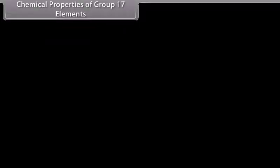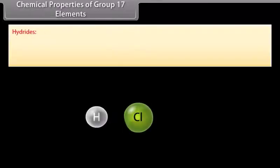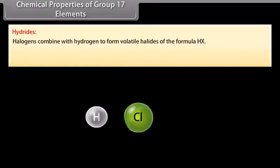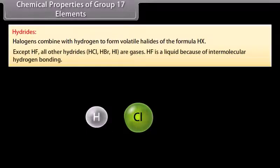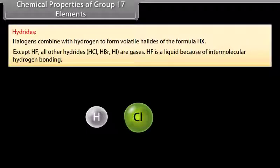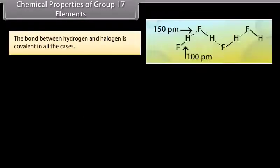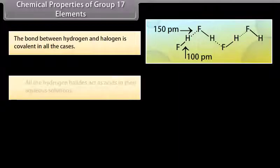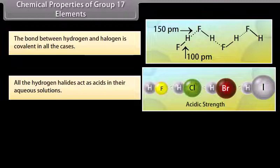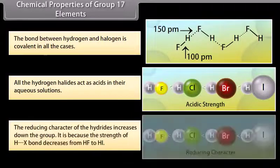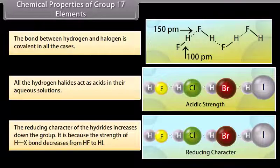Chemical properties of group 17 elements — Hydrides: Halogens combine with hydrogen to form volatile halides of the formula HX. Except HF, all other hydrides HCl, HBr, HI are gases. HF is a liquid due to intermolecular hydrogen bonding. The bond between hydrogen and halogen is covalent in all cases. All hydrogen halides act as acids in aqueous solutions, ionizing to give H+ and halide ion X-. The reducing character of the hydrides increases down the group because the strength of the HX bond decreases from HF to HI.